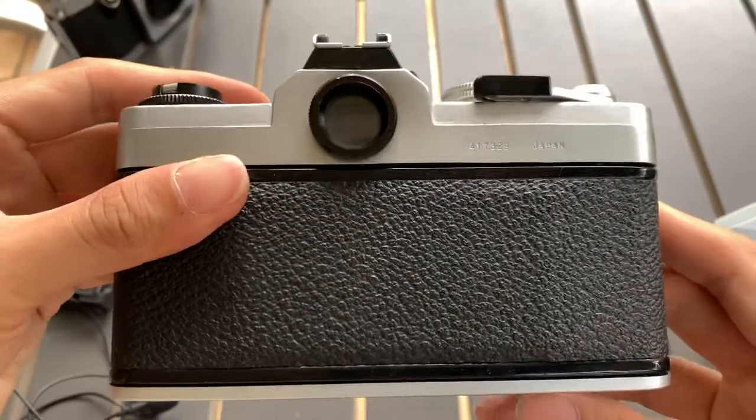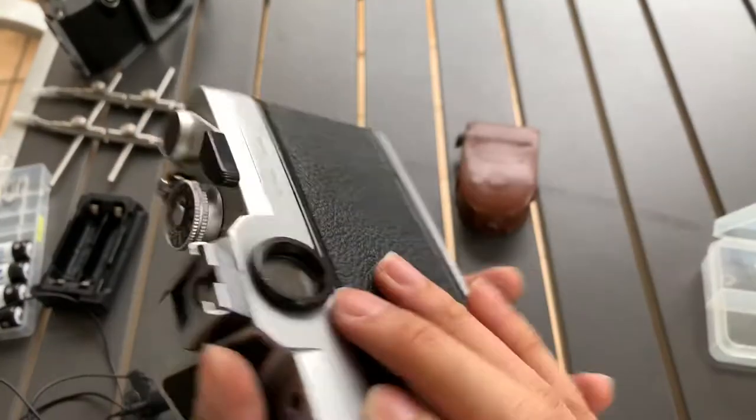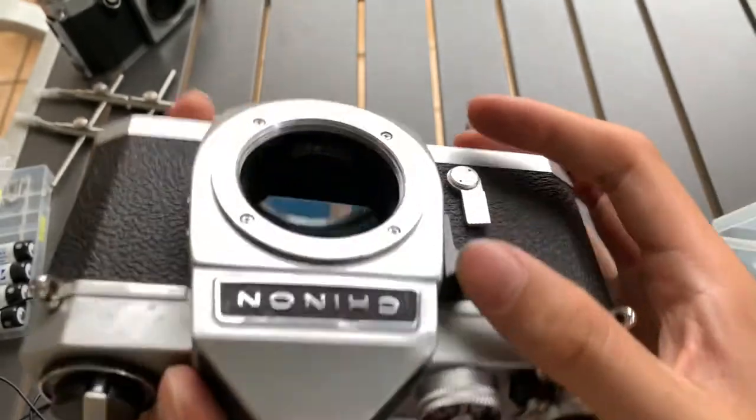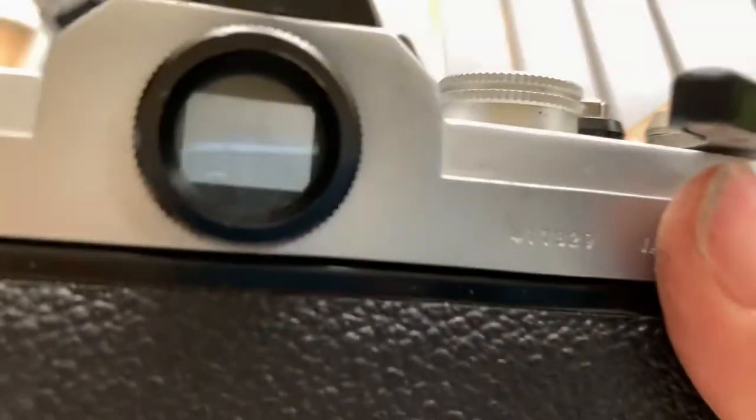And this is the back. All right, so I'm gonna start it off by showing you the light meter. To activate the light meter you press this down and then show you the meter itself. I'm not sure if you can see it, but yeah I can see that as I change the shutter